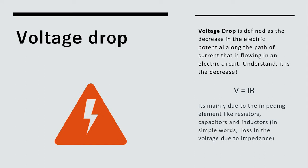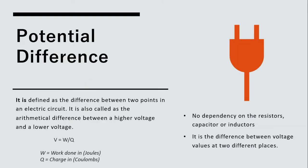First, voltage drop — what is it? It is decremental. Generally, voltage drop is nothing but the decrease in the electric potential along the path of the current flowing in a circuit. If there is a decrease in the electric potential along a path, that is called voltage drop. The formula is V = IR. This is mainly happening due to impeding elements, which are most likely resistors, capacitors, or inductors. It is simply the loss in voltage due to impedance.